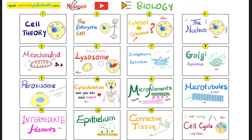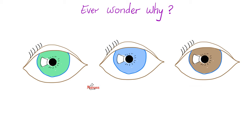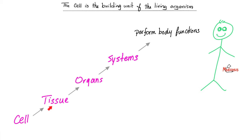Please watch these videos in order. Ever wonder why people are different? It has to do with genes. Recall that the cell is the building unit of the living organism. A group of cells will make a tissue, a group of tissues will make an organ, a group of organs will make a system, and the group of systems will perform your body functions.